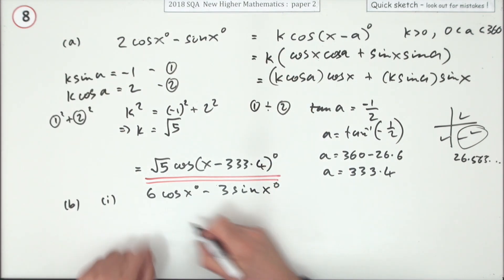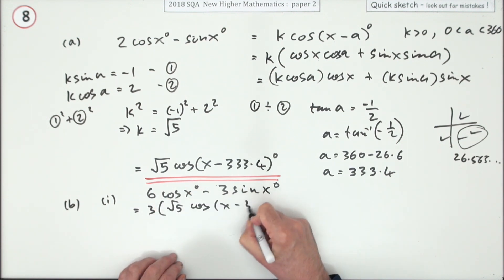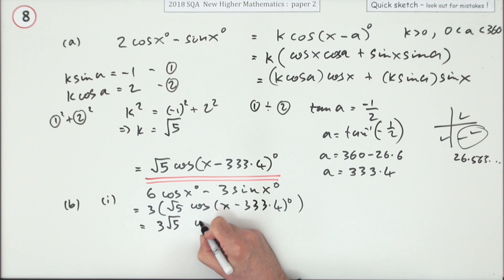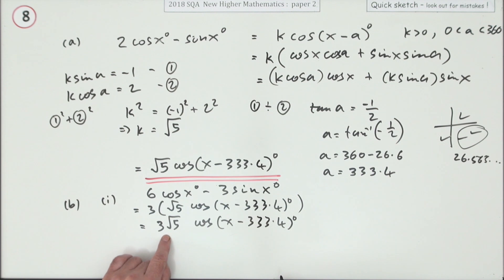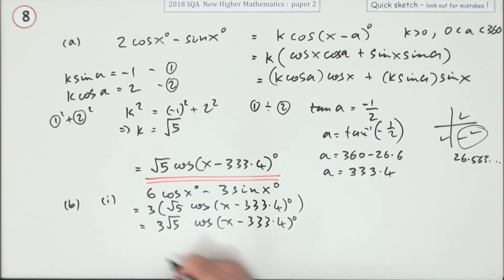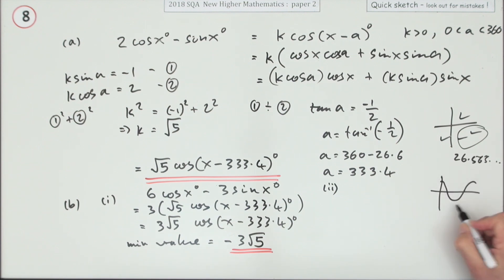Well, I just wasted time writing all that! For part two, the minimum value: since it's just a straightforward cosine with a phase shift, its amplitude is root 5, which means the minimum value will be negative root 5. You can leave it in that exact form.